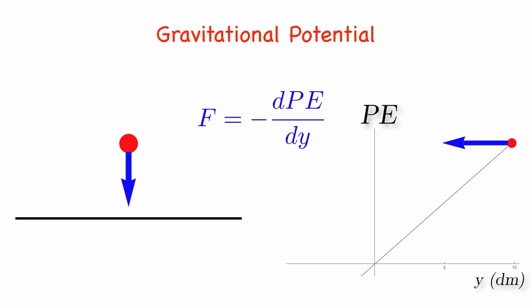The minus sign tells us that the force is in the direction that decreases the potential energy, which in this case is downward, or towards decreasing the height, y.